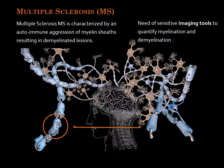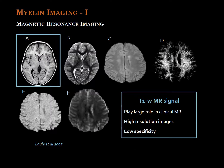In treatment or assessment of MS pathology there is therefore the need of sensitive imaging tools to quantify myelination and demyelination. Magnetic resonant imaging is one of the available methodologies to provide myelin imaging in vivo. Several MRI sequences are available with different sensitivity to myelin content. In this work we are going to focus on T1-weighted sequence, which is widely used in clinical MR imaging due to its high resolution. However, it is characterized by a relatively low specificity to myelin content.